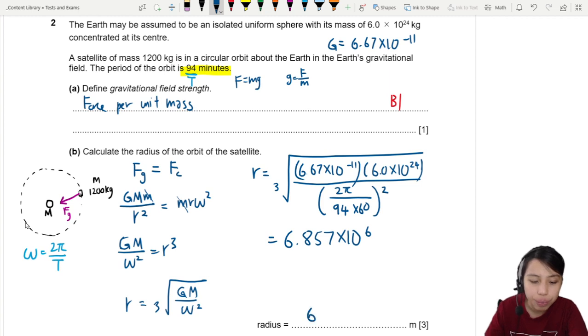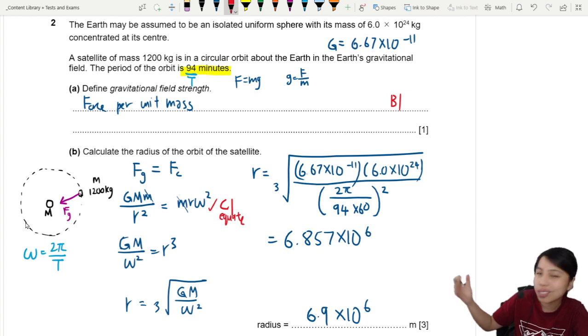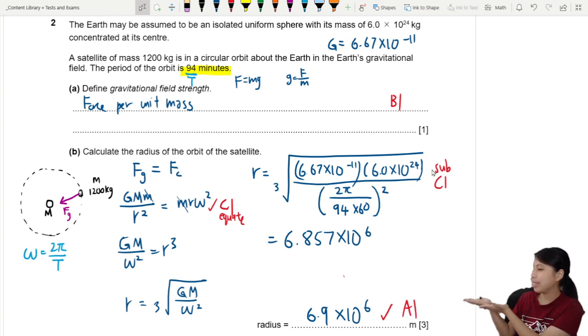With this, you should get 6.857 times 10 to the 6, or slightly different numbers. But you can round it off to 6.9 times 10 to the 6. The first mark comes from you equating centripetal force and gravitational force. The second mark is you sub in all the correct values: your constants, your data, your time, your omega. And lastly, if everything goes well, calculator pressed correctly, you get your final mark.